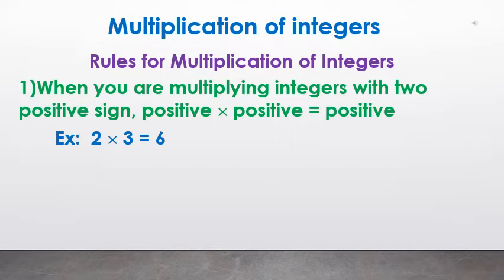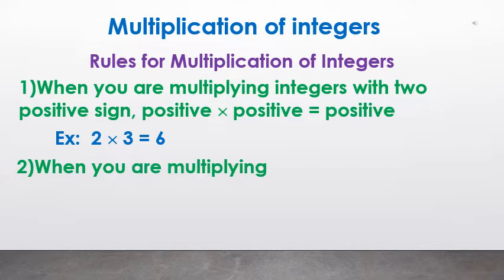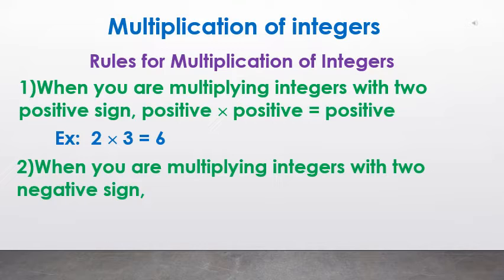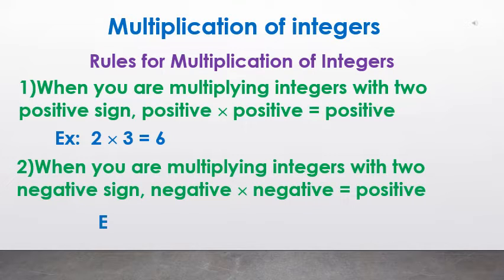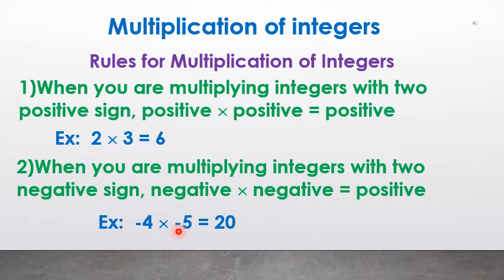The second rule: when you are multiplying integers with 2 negative signs, negative into negative is equal to positive. For example, (−4) × (−5) is equal to 20, because minus into minus gives plus, therefore plus 20.